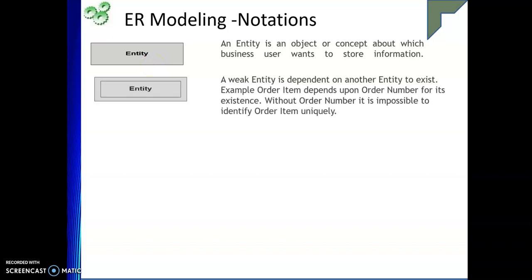If you want to represent a weak entity, then we use a double rectangle. What is a weak entity? A weak entity is one which doesn't have any key attribute, or which is completely dependent on the strong entity. If the strong entity is not part of the ER diagram, immediately the weak entity will also not be part of the ER diagram. So weak entity is represented by a double rectangle symbol.